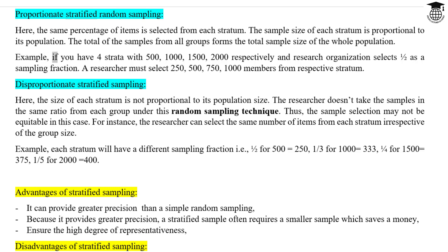Example: if you have four strata with 500, 1000, 1500, and 2000 members respectively, and the research organization selects one-half as a sampling fraction, a researcher must select 250, 500, 750, and 1000 members from the respective strata.